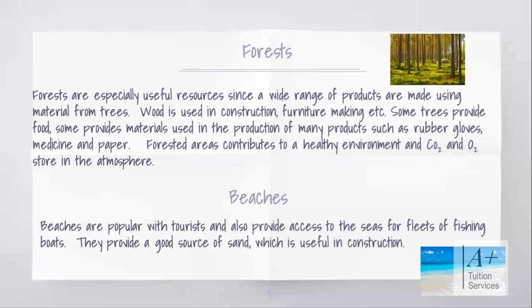Beaches are another renewable resource, and Caribbean islands are surrounded by them. The beach is a popular tourist and recreational ground that can generate revenue, and also provides access to the sea for fleets or fishing boats — beaches are where fishermen dock to bring in their goods. Beaches also provide a good source of sand, which is useful for construction. But just like any other resource, we cannot deplete it — we cannot keep dredging beach sand for construction because it can lead to erosion and damage. Similarly, we should not cut down all the trees, since they serve a purpose in maintaining a healthy atmospheric balance. When we cut down trees, we should think about planting them back, because they are renewable.